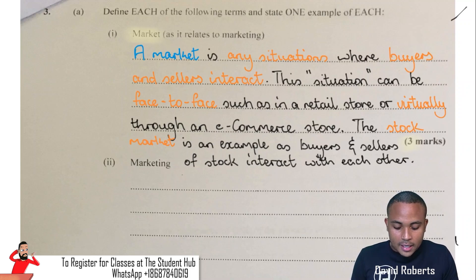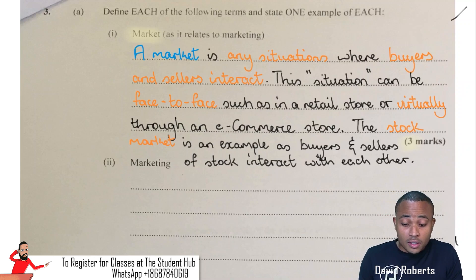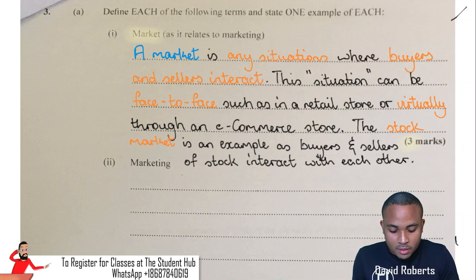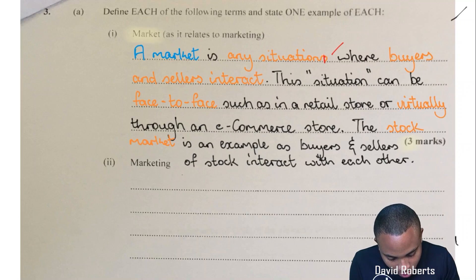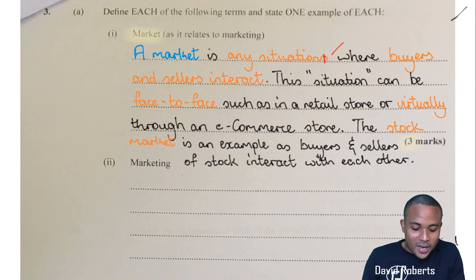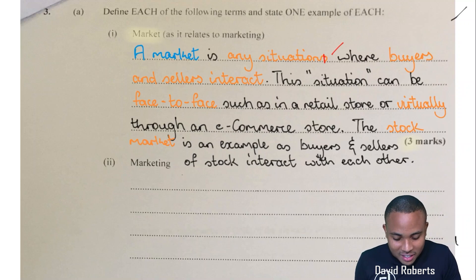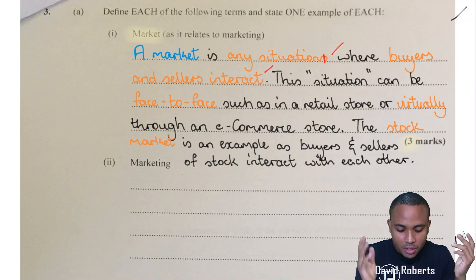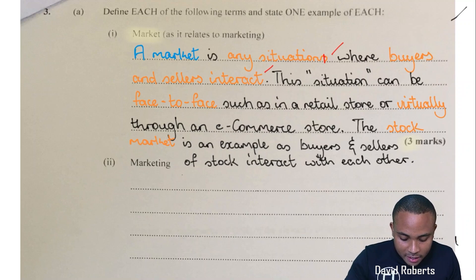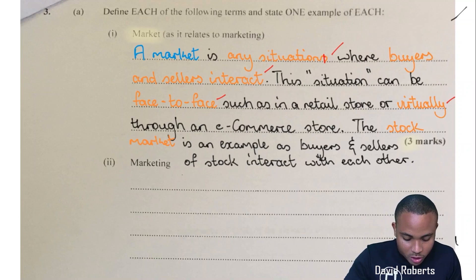We have the definition and the example. A market is any situation where buyers and sellers interact. So it's not only a physical place — it's any situation. This can be face-to-face or virtually through an e-commerce store.